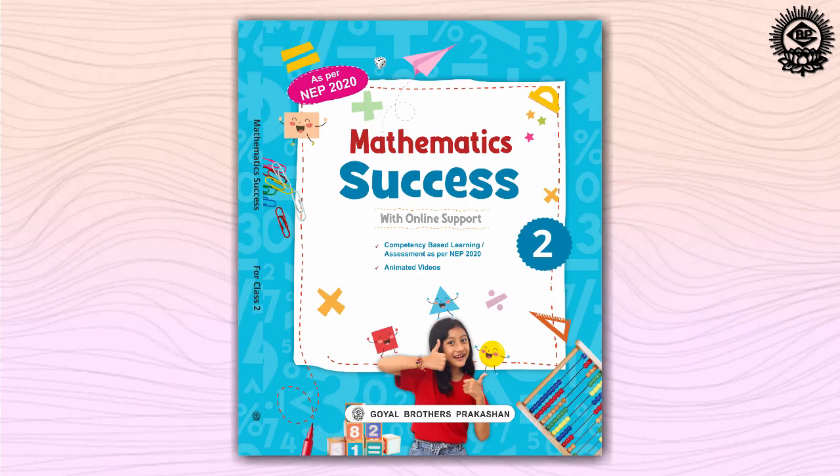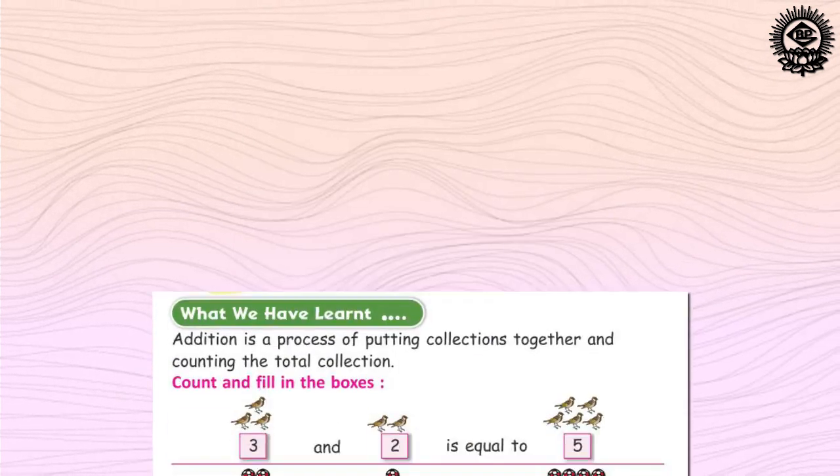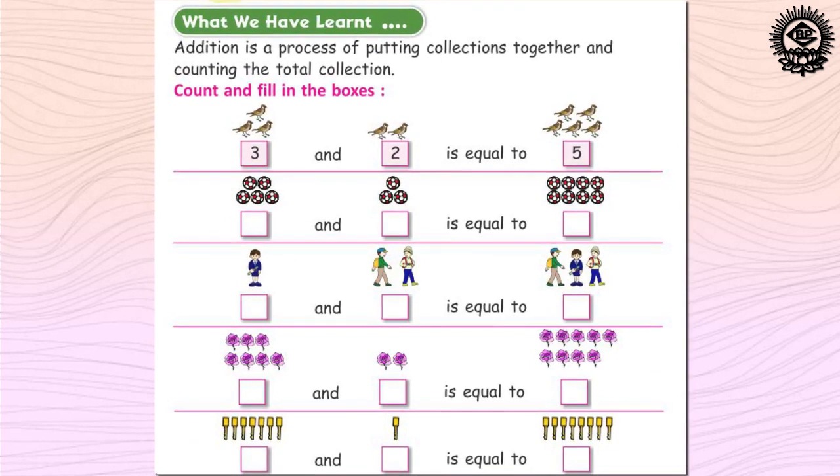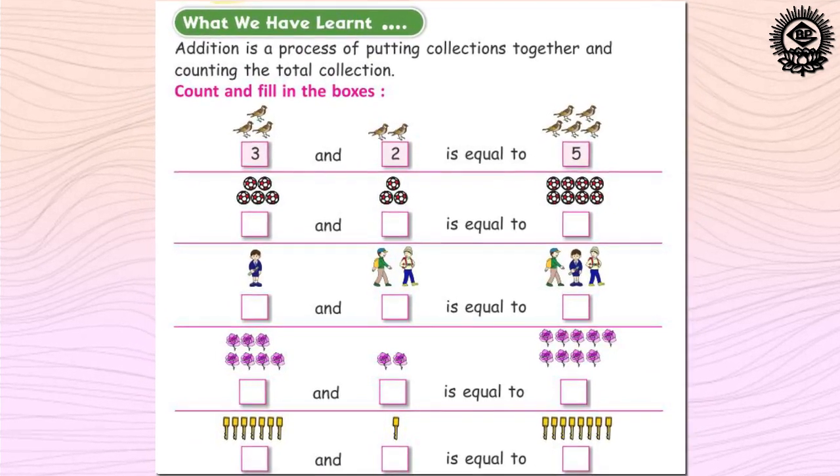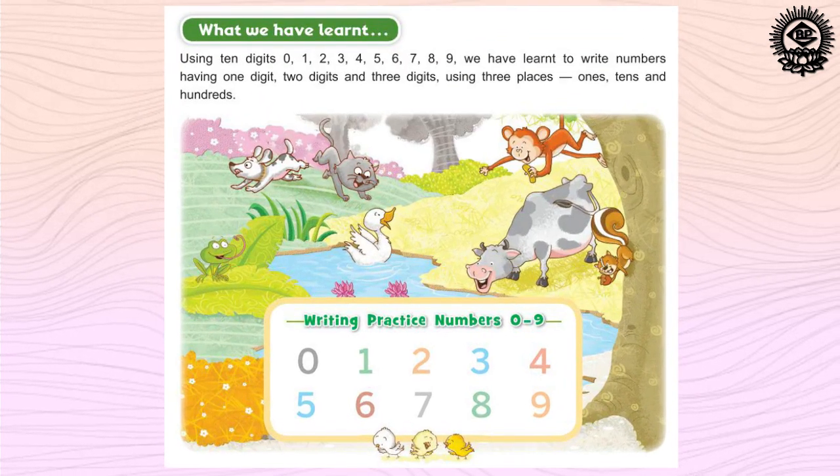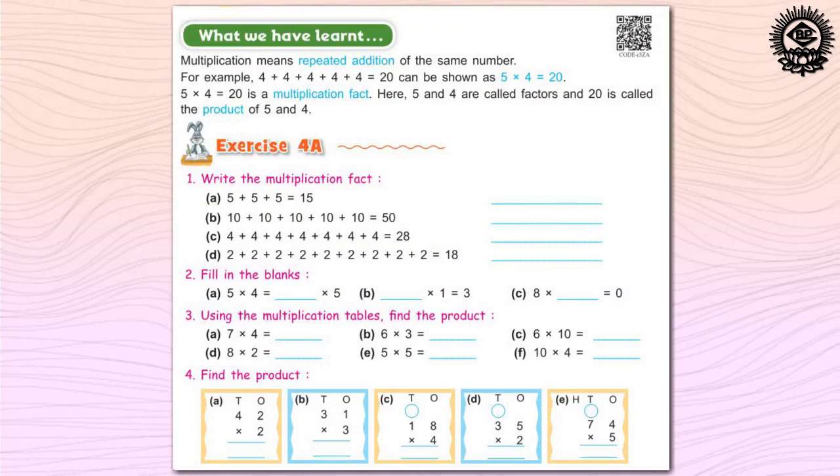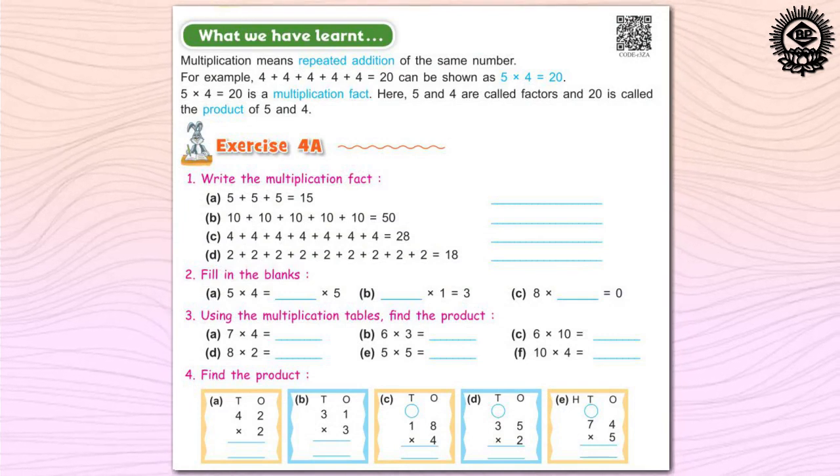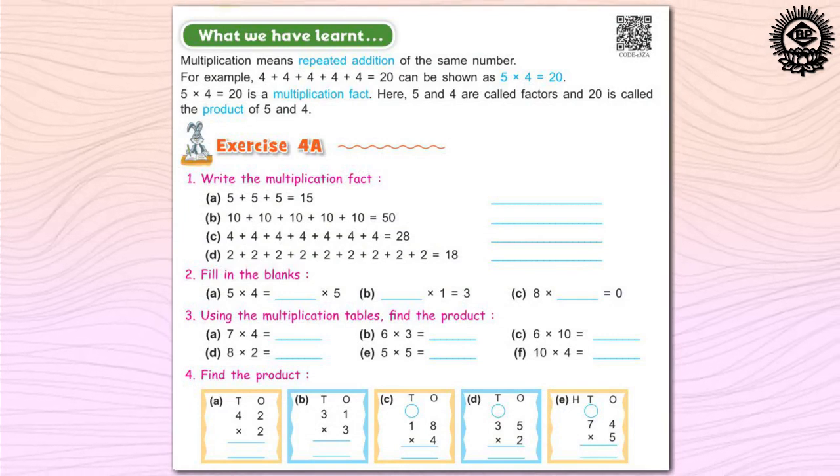First of all, let us discuss the learning tools used in the course book. Each chapter starts with what we have learnt that contains questions on the concepts learnt in the previous class. It refreshes the concepts already learnt. It consists of exercises, pictures and activities. These help in easy recapitulation of concepts.